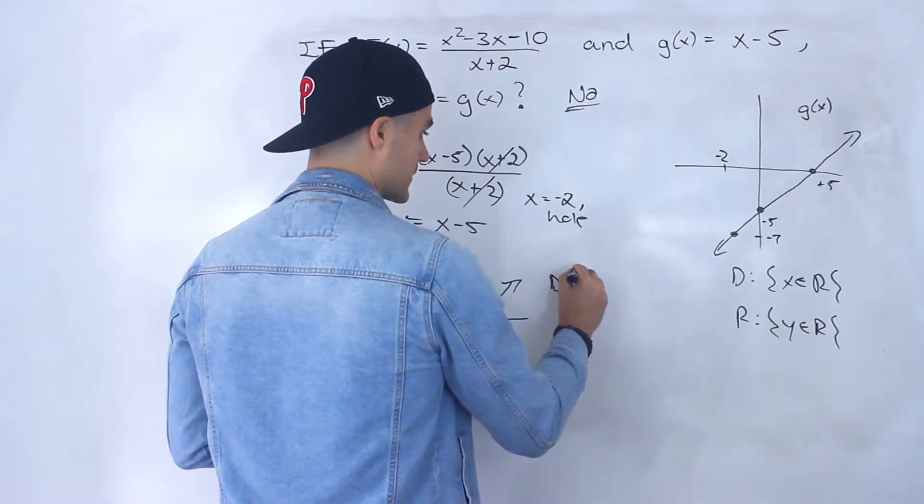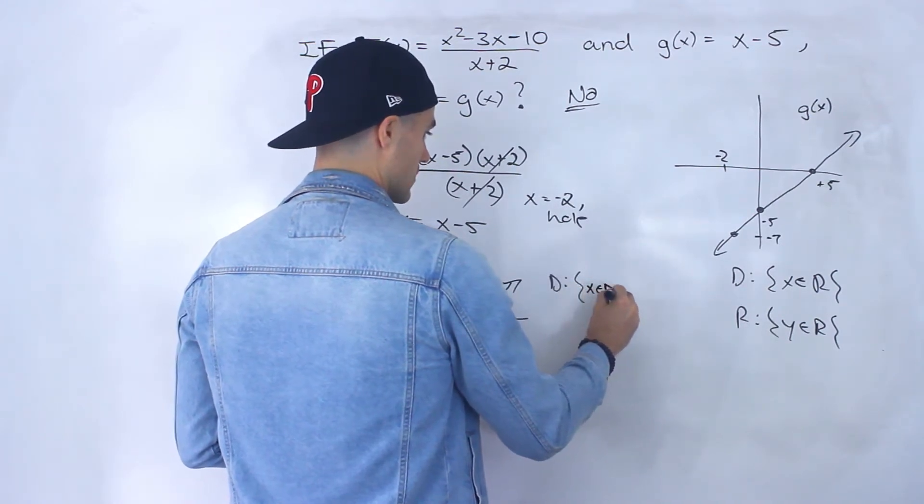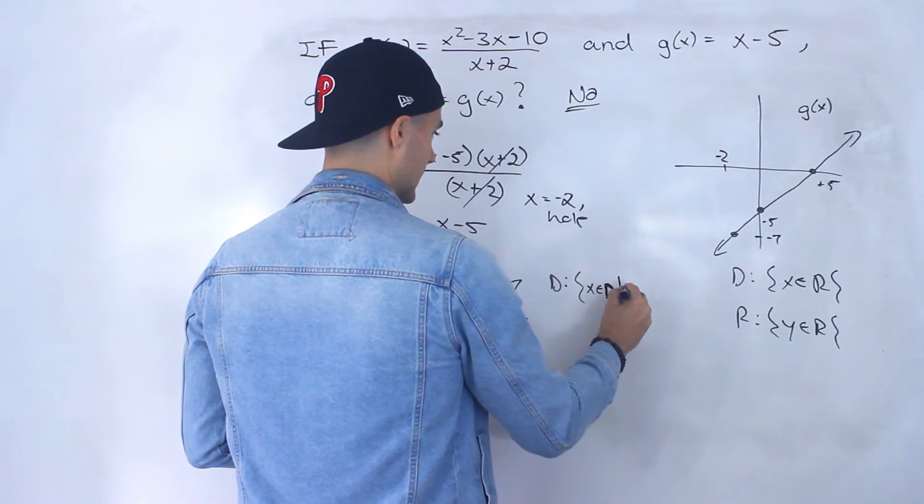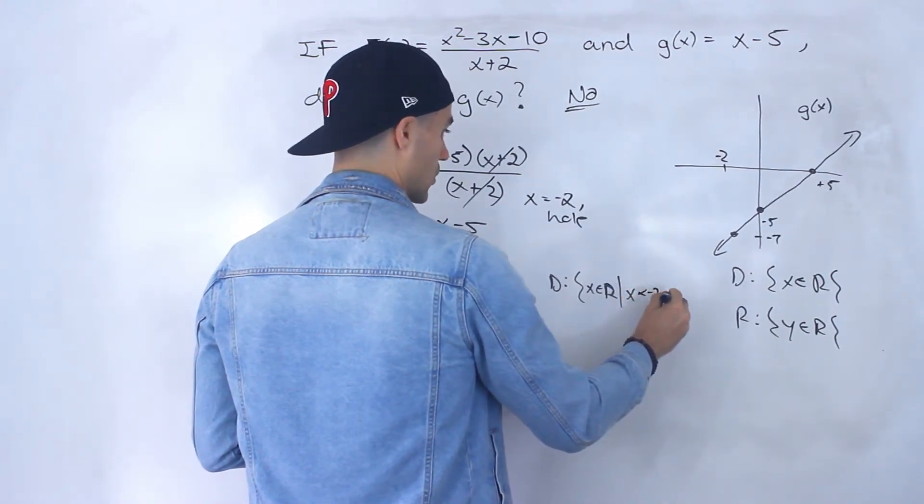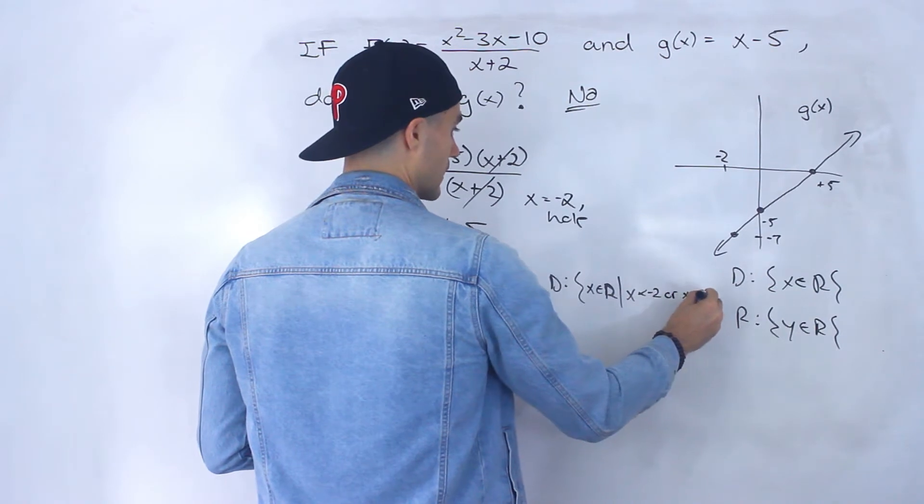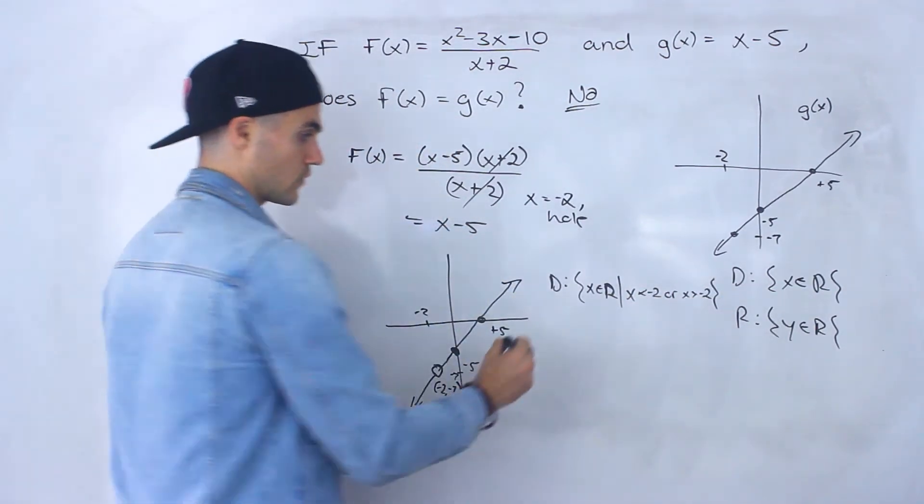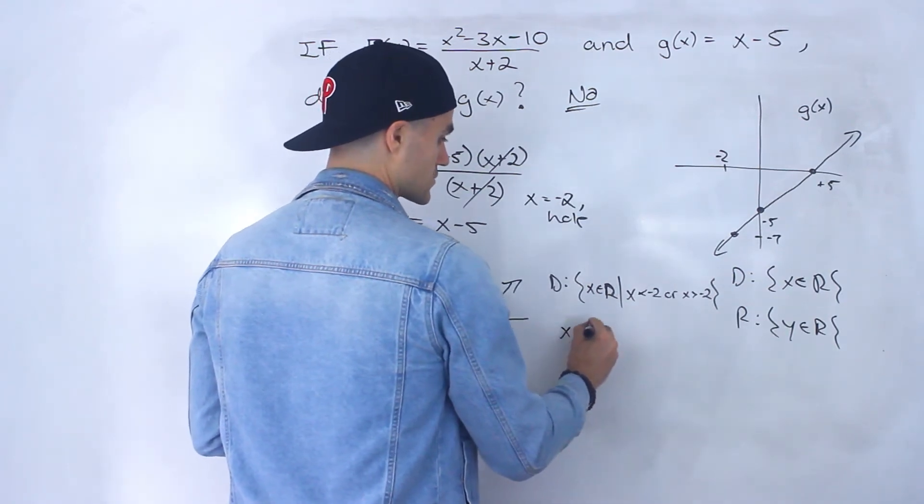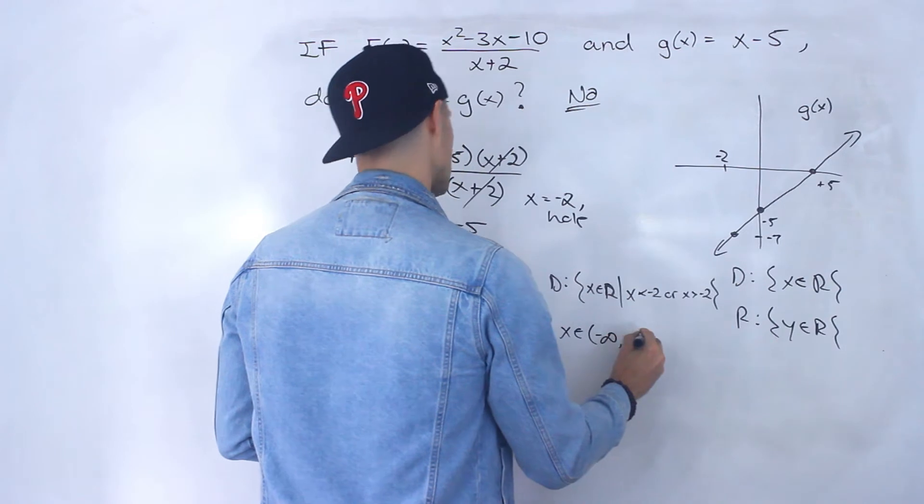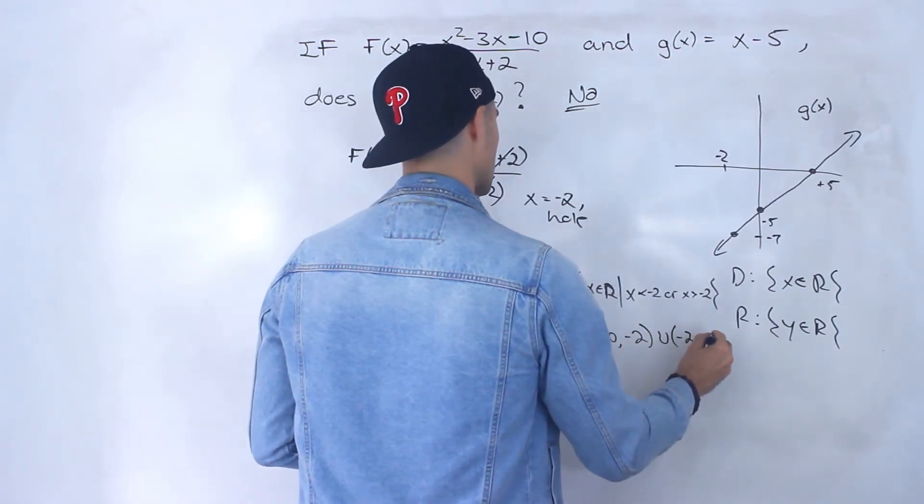So the domain for f(x) would be x ∈ ℝ, but x < -2 or x > -2. Notice how there's a break at -2. If we put it in interval notation, we would say all the x values go from -∞ to -2, or from -2 to +∞.